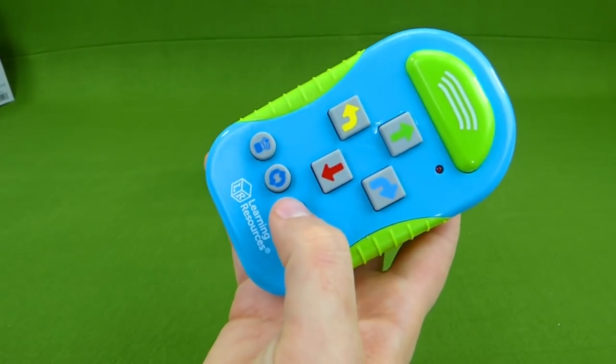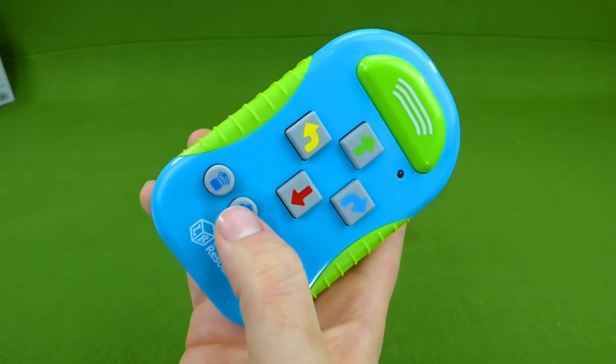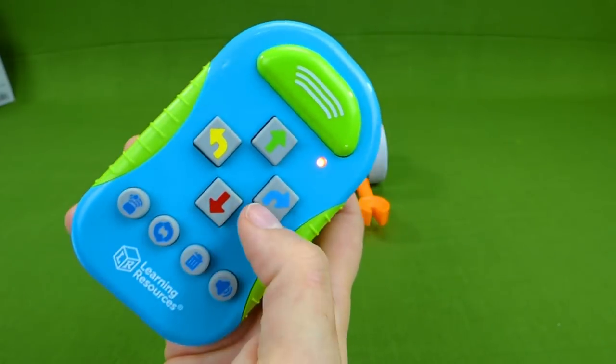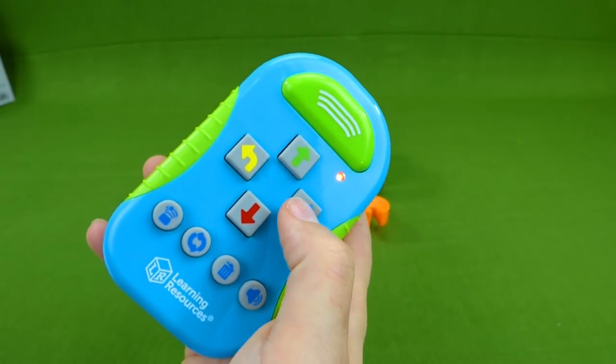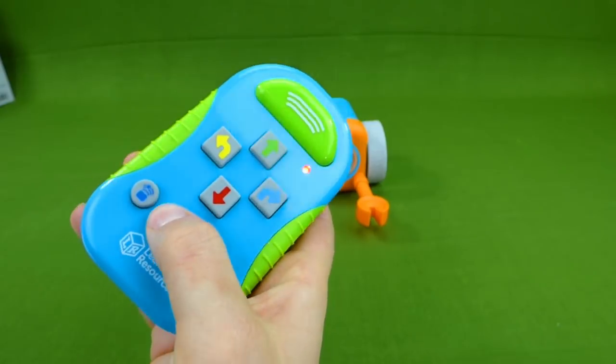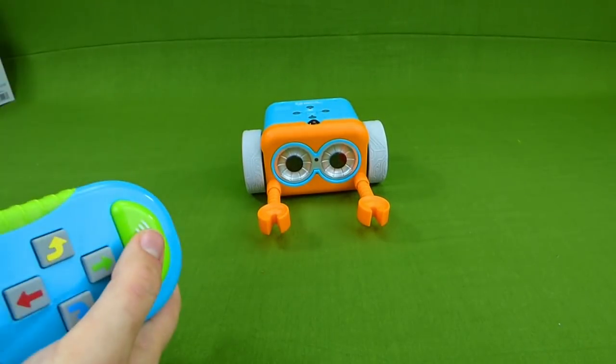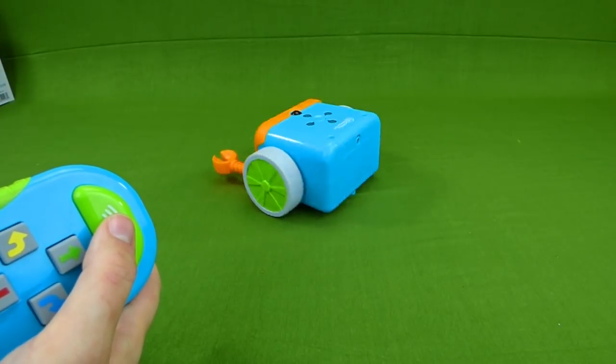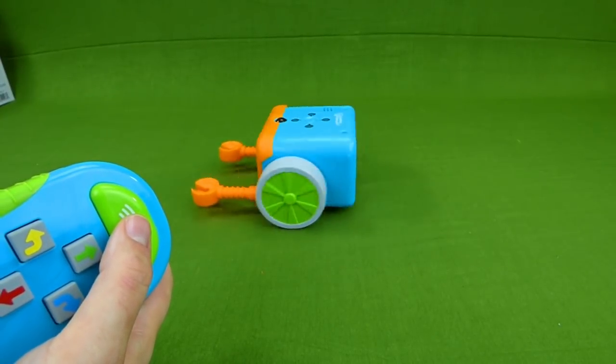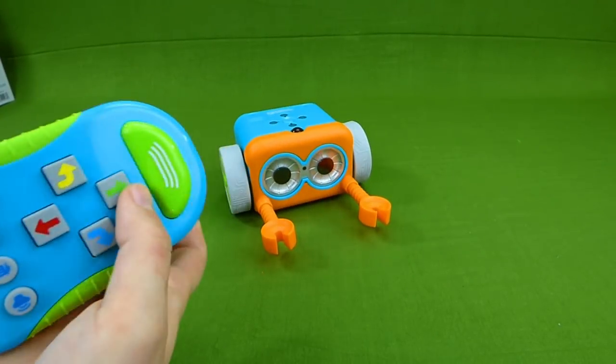So let's do this. We're going to clear it out. And then we're going to do loop. Right, right, right, right. Let's see what he does. There we go. Ah, he's going in circles! Woohoo! That is awesome.